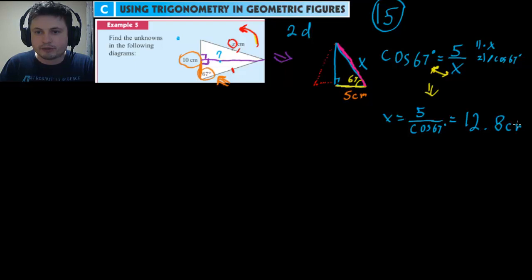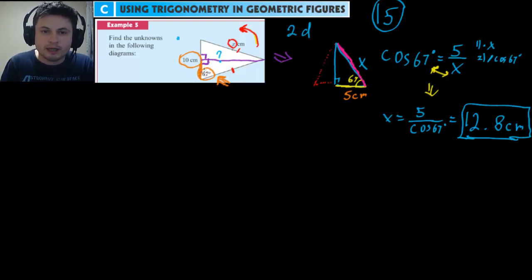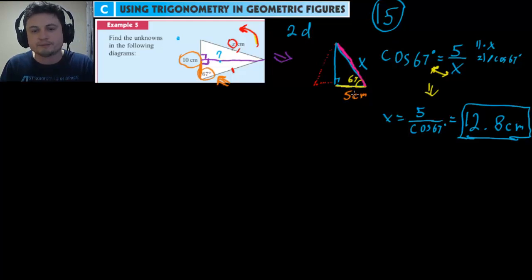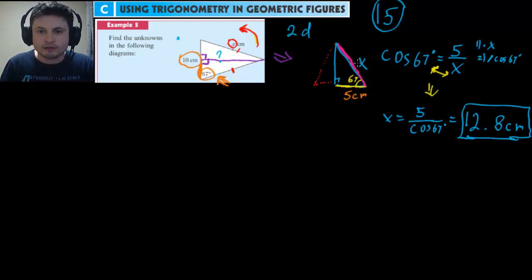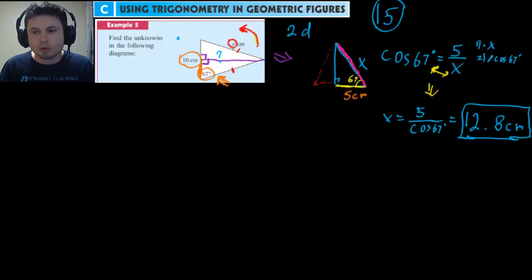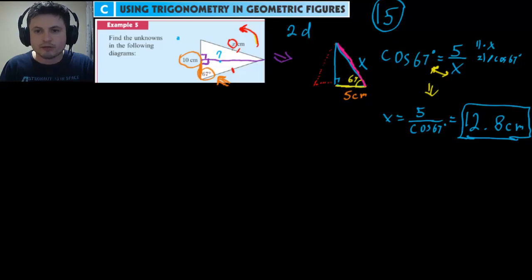Using a calculator: 5 divided by cosine of 67 gives approximately 12.8, so X equals 12.8 centimeters. To summarize: first, find the right triangle inside the figure; then use the given angle to identify which trig ratio applies (in this case cosine); then rearrange and solve for X. This is how all problems in this subchapter will work — always find the right triangles first.